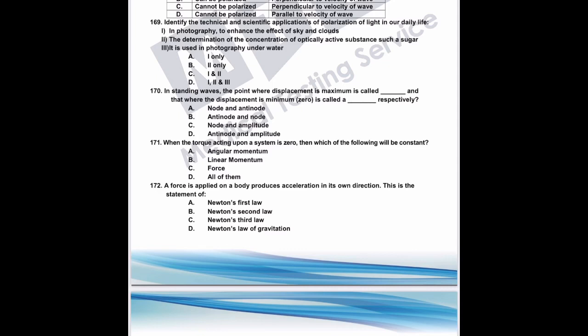Question 170: in standing waves, the point where displacement is maximum is called an antinode, and the point where displacement is minimum is called a node. The correct answer is B.